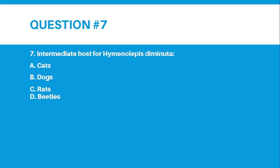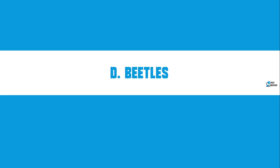Number 7. The intermediate host for Hymenolepis diminuta is: Letter A, cats; B, dogs; C, rats; or D, beetles. And the answer for number 7 is letter D, beetles.